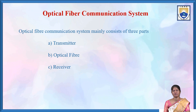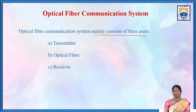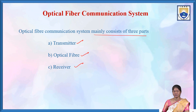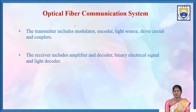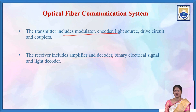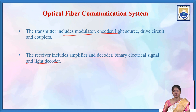The optical fiber communication system mainly consists of three parts: transmitter, optical fiber, and receiver. The transmitter includes a modulator, encoder, light source, drive circuit, and couplers. The receiver includes an amplifier, decoder, and light decoder for converting binary electrical signals.